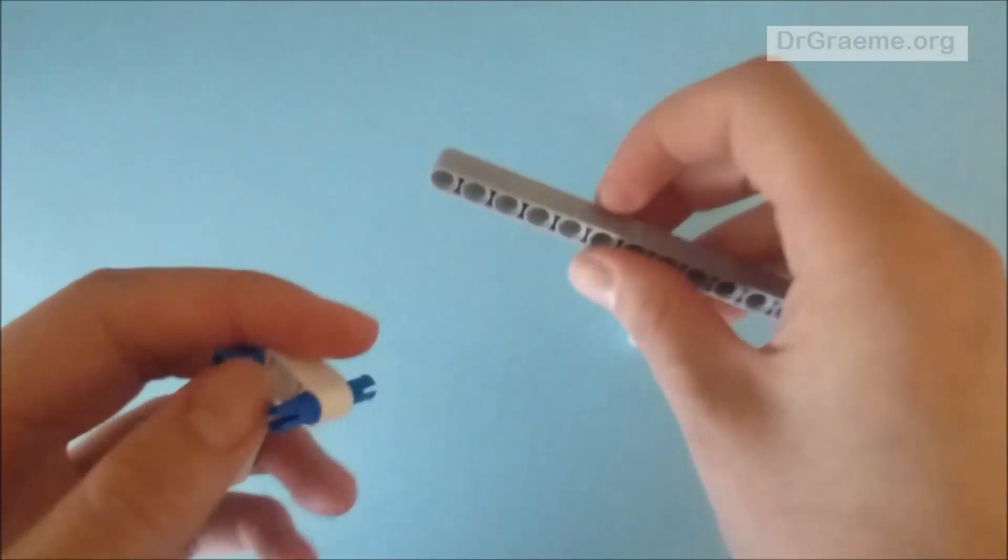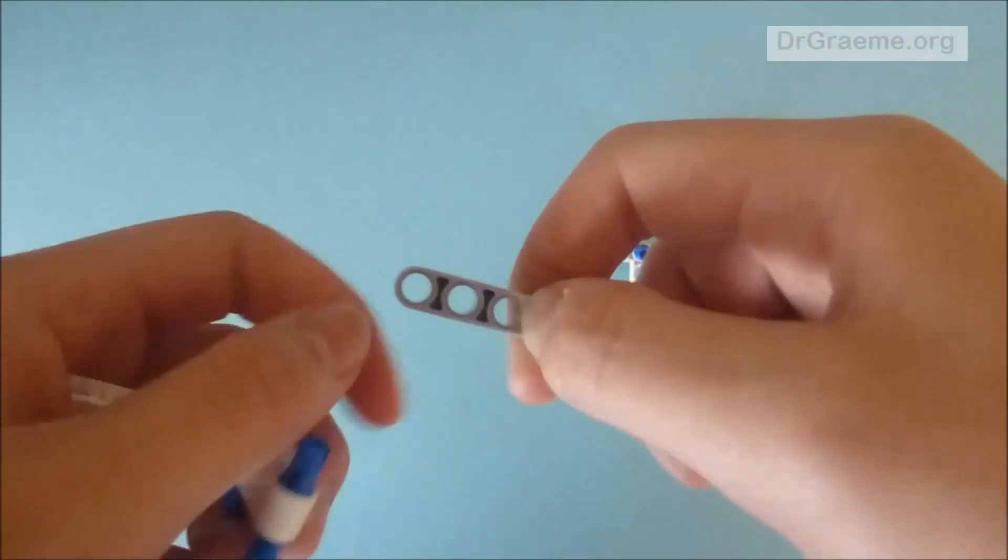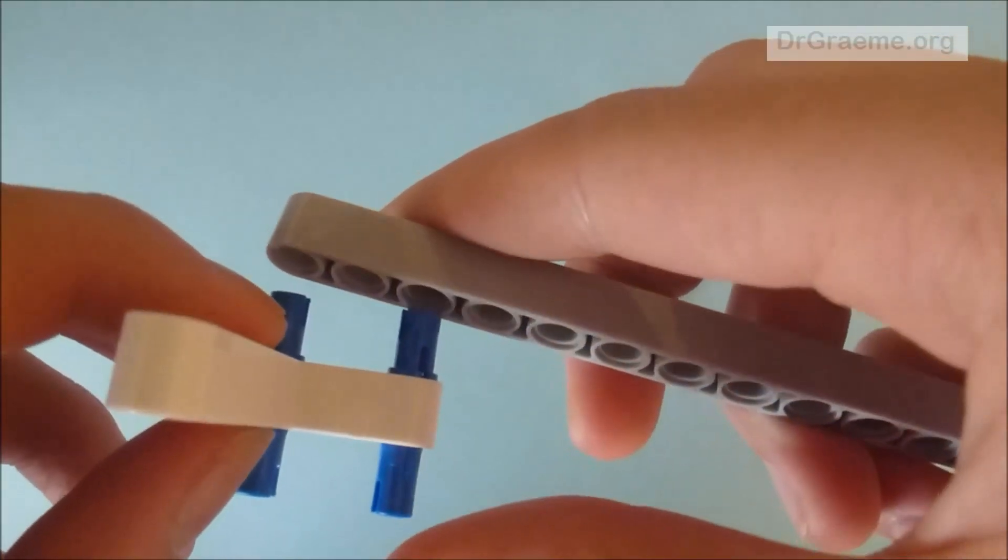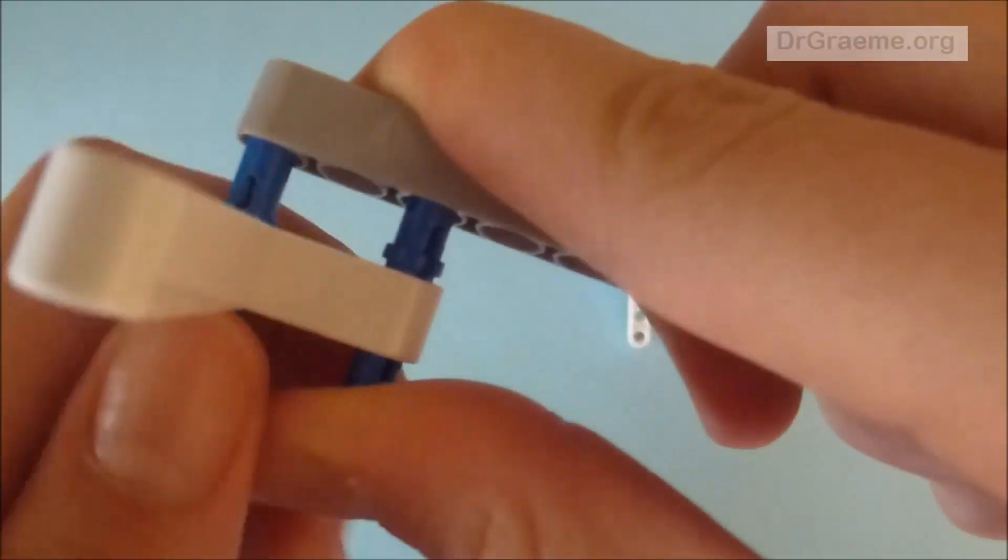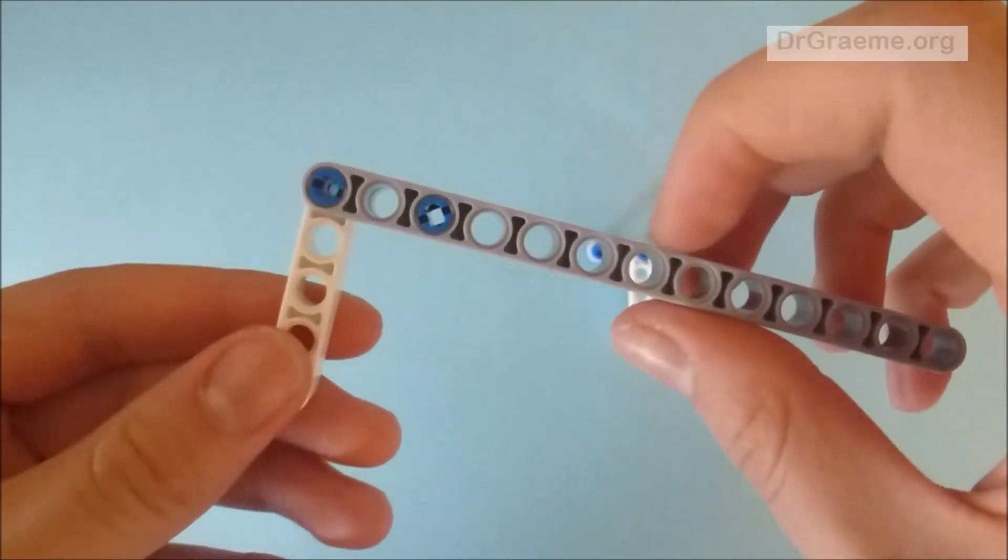Now we make sure that we take the last 3 holes. Use these 3 holes and place them together with these 2 connecting beams. So it should look like this.